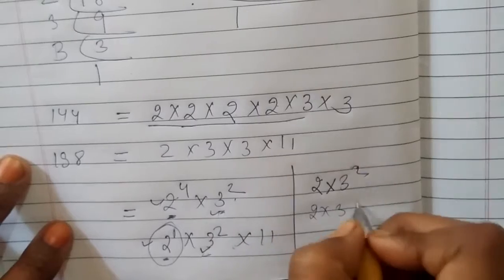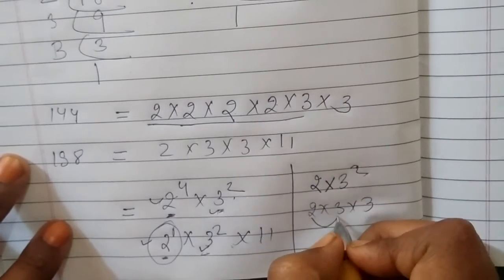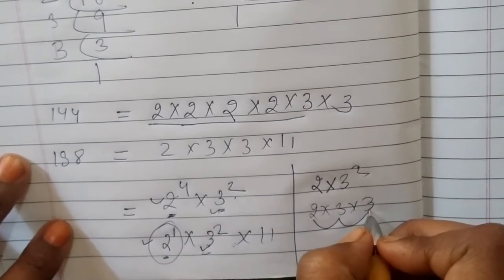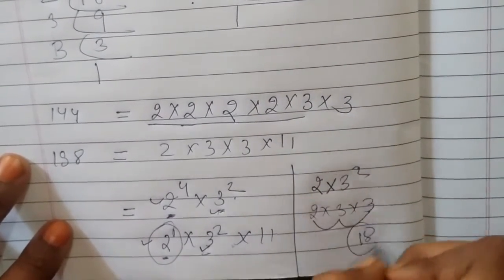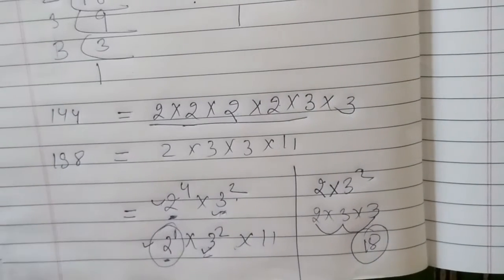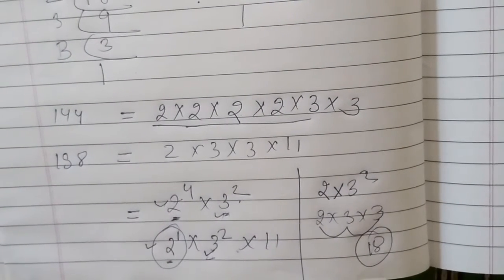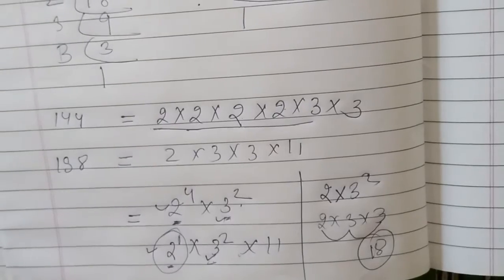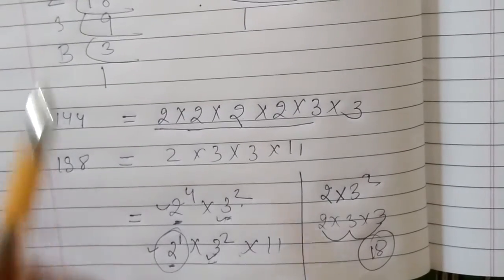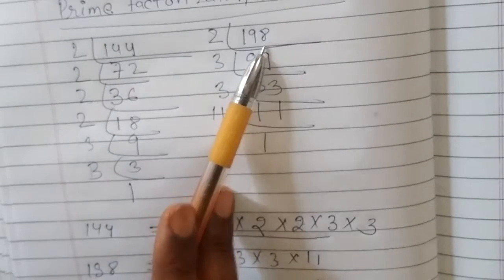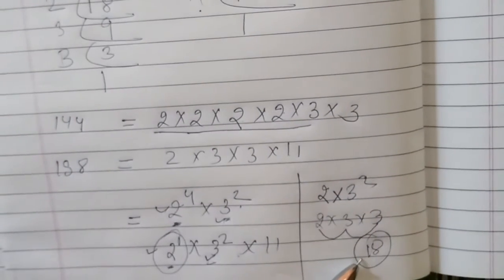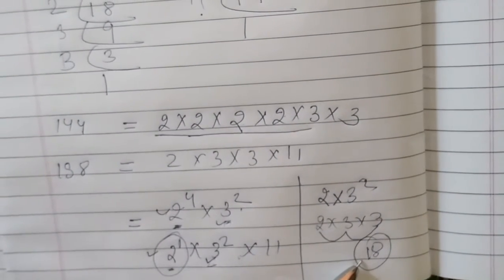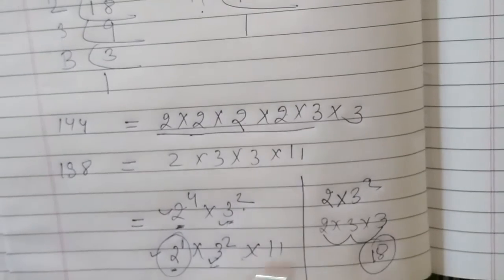Two into three into three — two threes is six, and six threes is 18. So 18 is the HCF of 144 and 198. Is that clear? Now come to the next question.